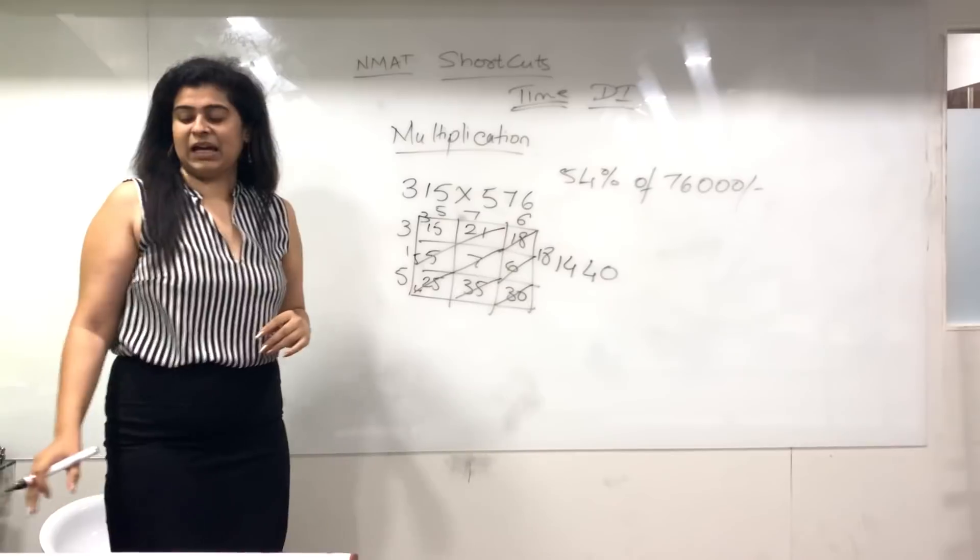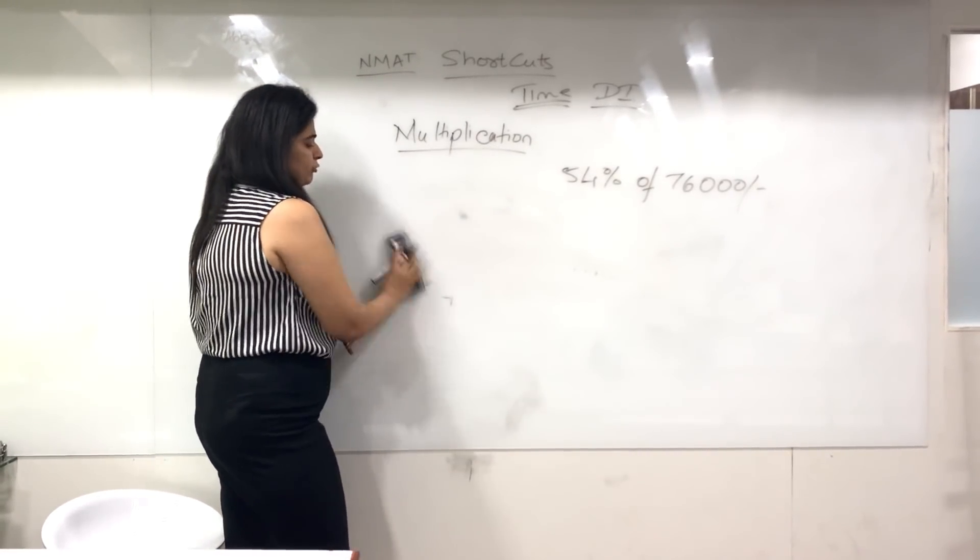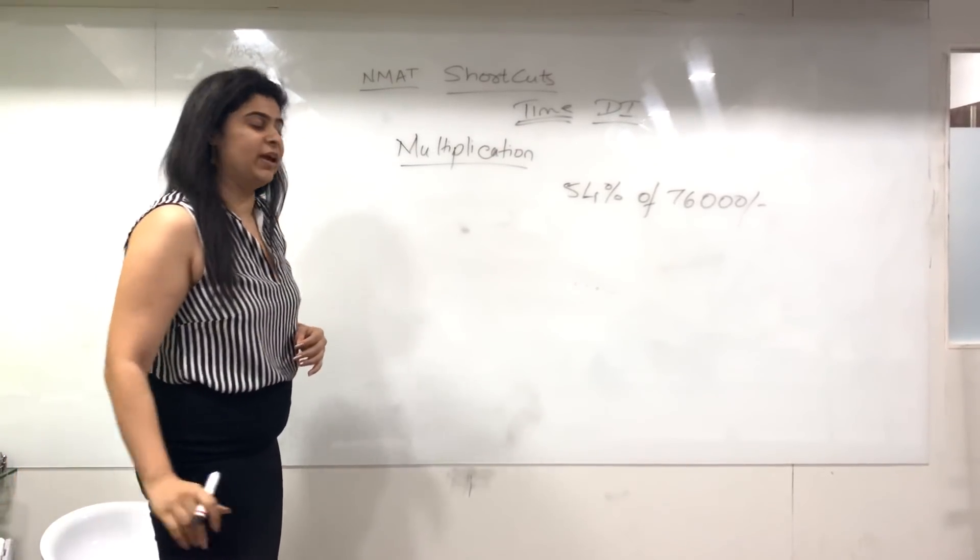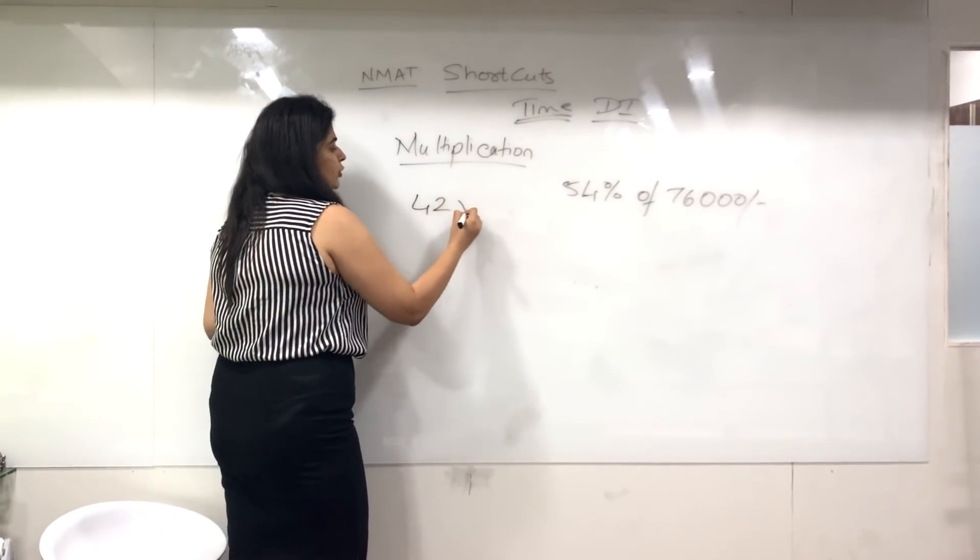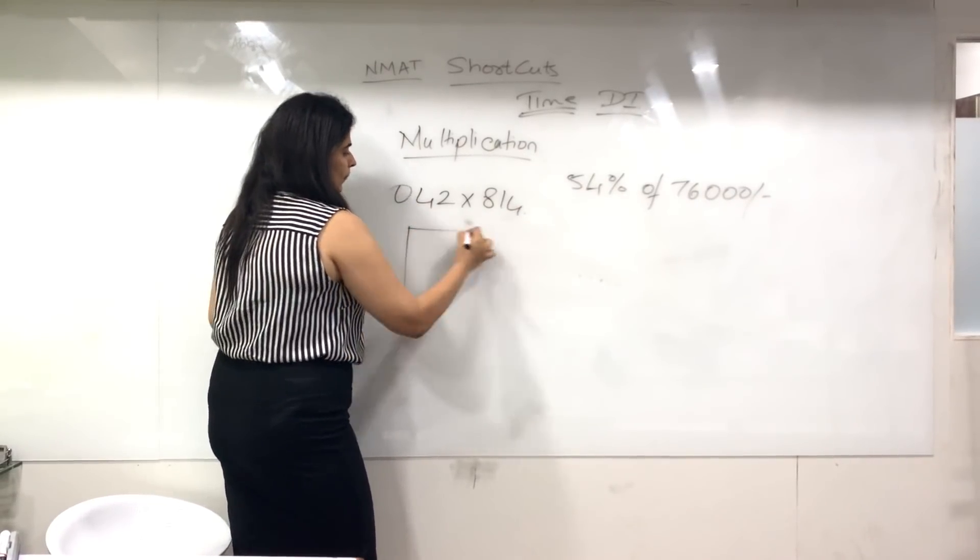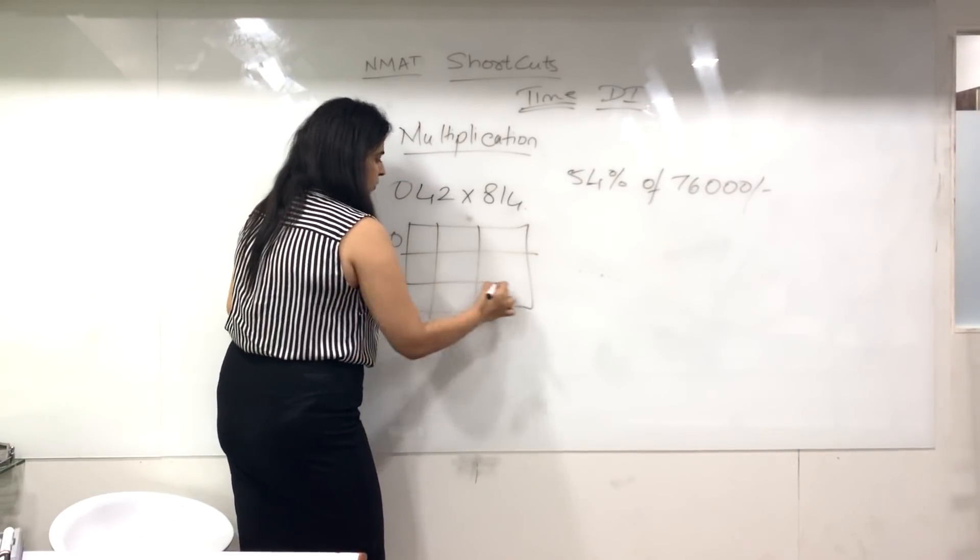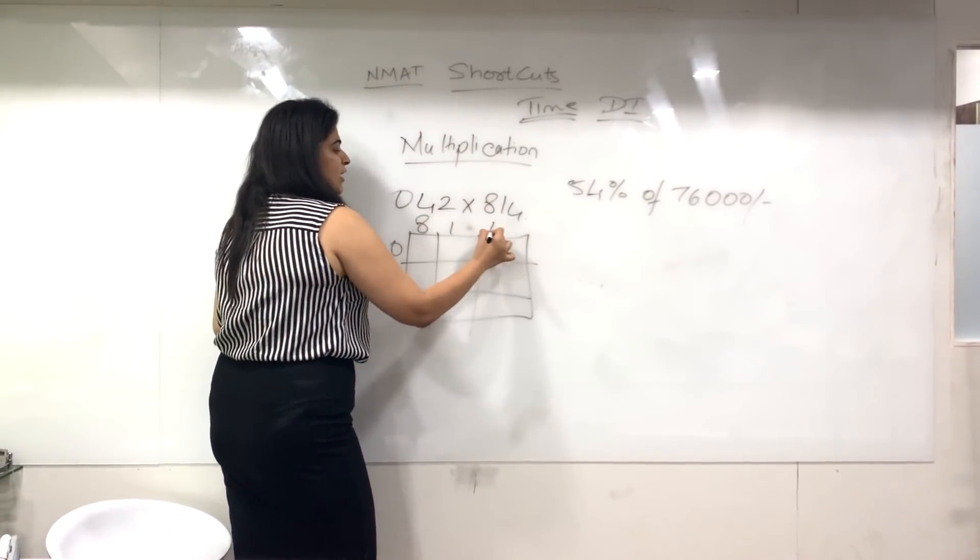Suppose it's an uneven combination like a 2-digit into a 3-digit number. You just need to add a zero up ahead. Like if I had 42 into 814, add a zero, make your 3 by 3 matrix, and that's how you quickly solve it. Try this out as a practice question and you can put the answers in the comment section.